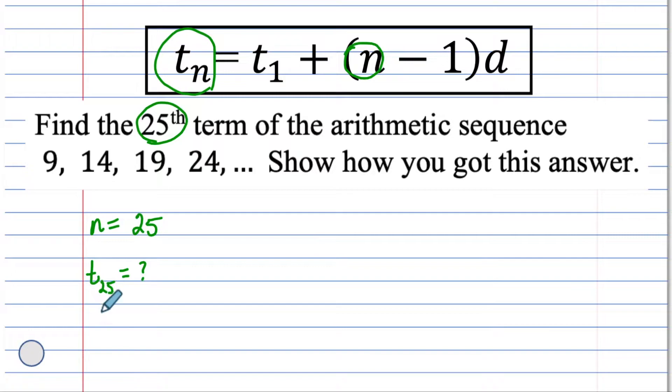We're given the first term, t1 is 9. And we're also able to find out what the d is. What is the d? The common difference is the second term minus the first term. The second term minus the first term. 14 minus 9, which is 5.